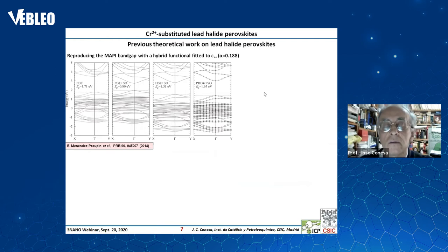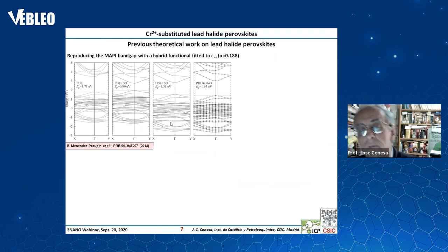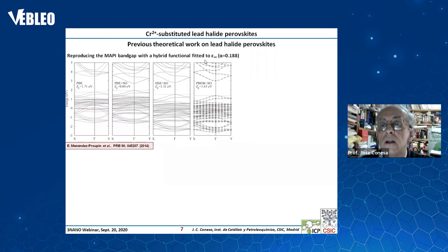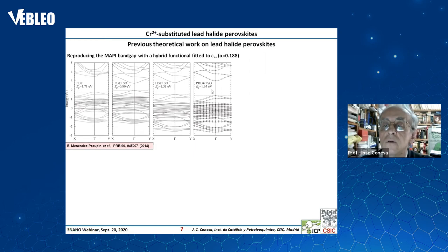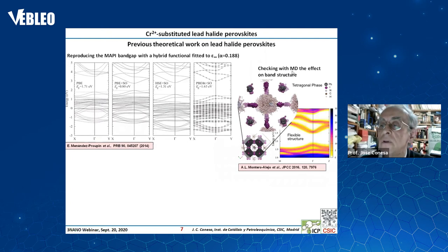Moving now to lead halide perovskites, it is necessary to comment that we have previously done calculations of the lead halide perovskite band gap using a hybrid functional fitted to the optical dielectric constant. Only when we use alpha = 0.19 are we able to obtain the proper band gap, as is very well known for these lead halide perovskites — in this case methylammonium lead iodide perovskite.